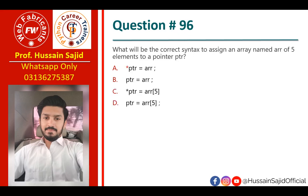What is the correct syntax to assign an array named `arr` of 5 elements to a pointer `ptr`? You can write `ptr = arr` directly. Writing `ptr = arr[5]` is wrong because that would only assign the last element, whereas `ptr = arr` assigns the first element and gives access to the sequence.